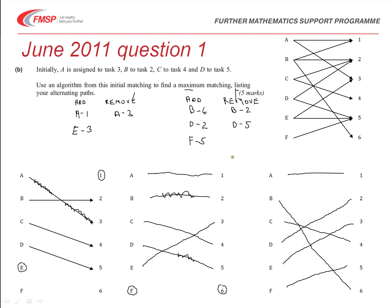And so, we can say from that that A does task 1, B does task 6, C does task 4, D does task 2, E does 3, and F does 5.